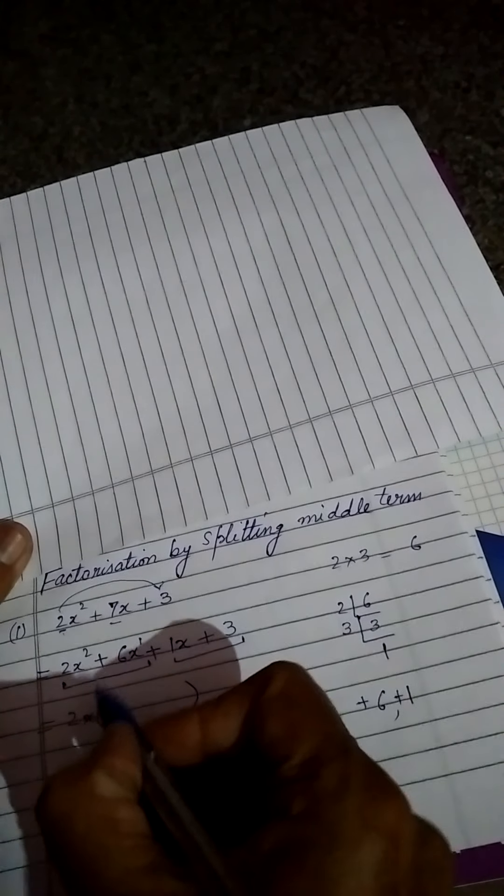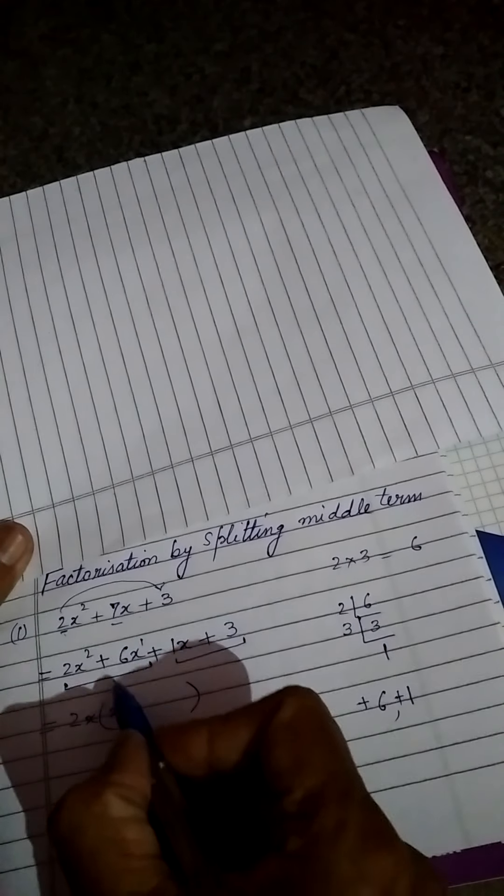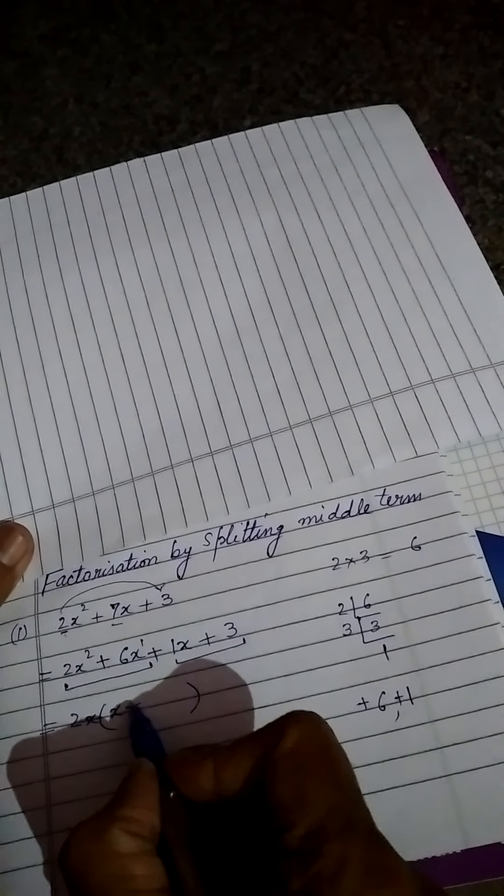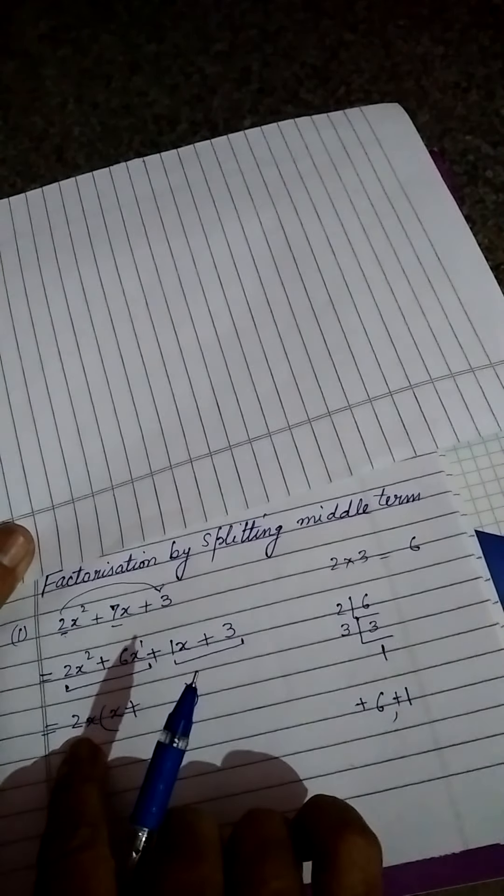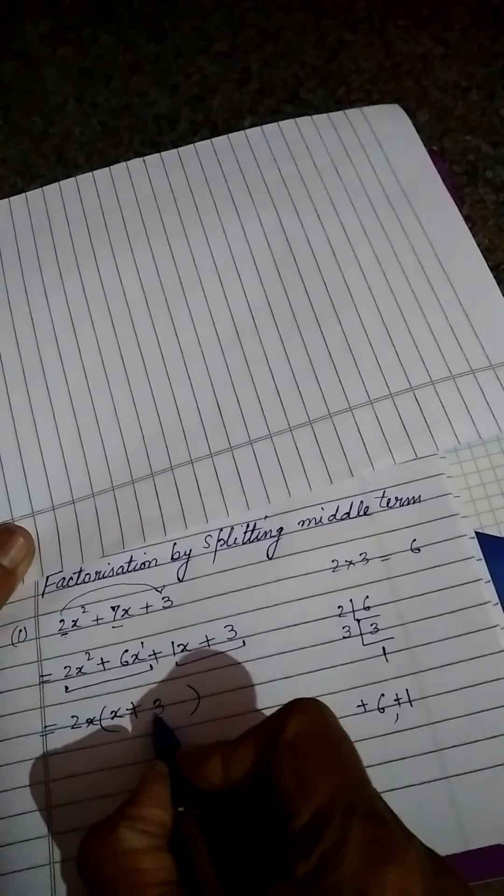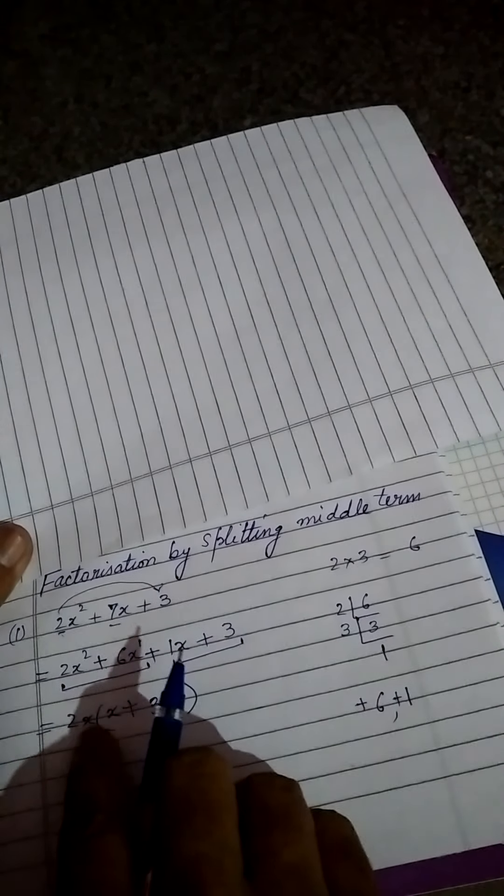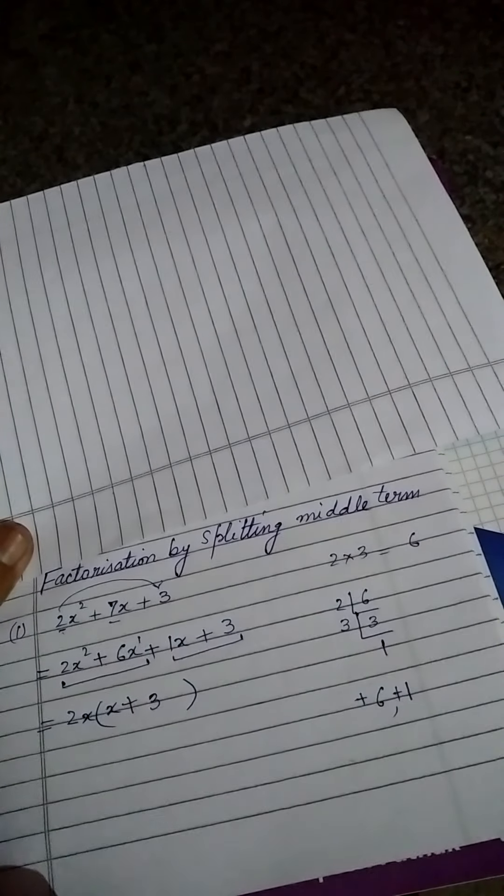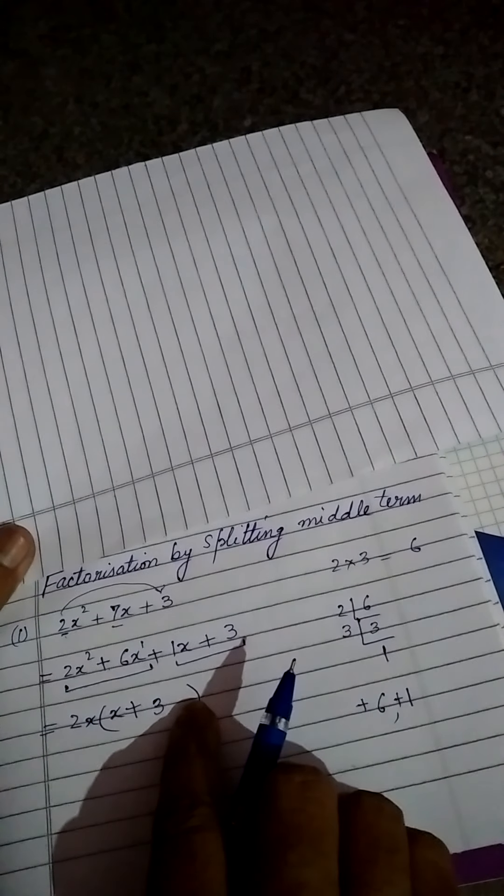So inside we will have 2 is already out. Out of 2x, 1x is out. So 1x will be in. Here we have plus sign. So plus sign, this will come. Now in 2's table, 2 threes are 6. So here we will write 3. It had only 1x. So x is already out. Common means both have given. So it will not have any x. Only 3.